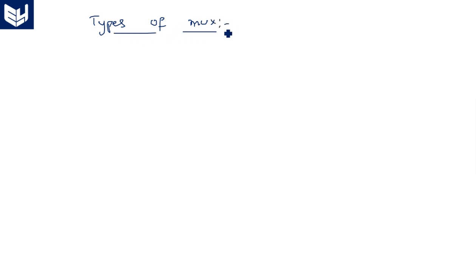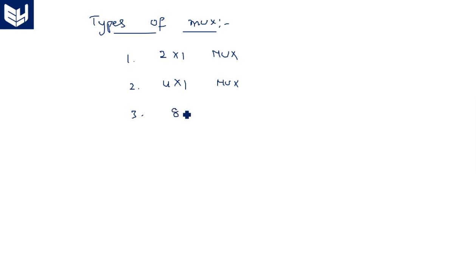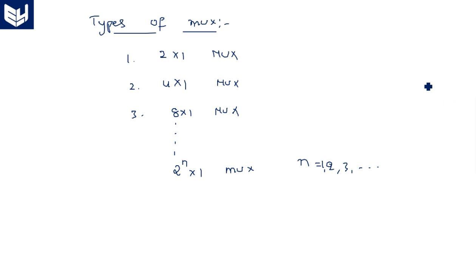Now let us see the types of multiplexer based on size. There are several types: 2 by 1 multiplexer, 4 by 1 multiplexer, 8 by 1 multiplexer, and so on, as 2 power n by 1. When n equals 1 it's a 2 by 1 mux, when n equals 2 it's a 4 by 1 mux, and so on.